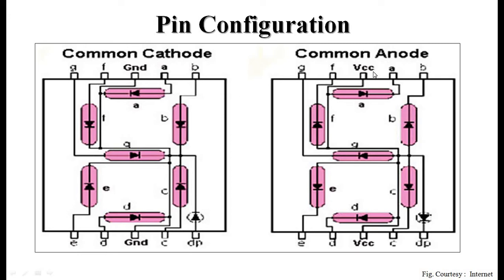For common anode type, the same configuration applies but instead of a ground pin, there is a VCC pin — supply is given through this common VCC line to all LEDs, and separate pins are grounded to complete the circuit. The symbolic representation of the LEDs is shown in the opposite direction to indicate that cathodes are separate but the anode is common.